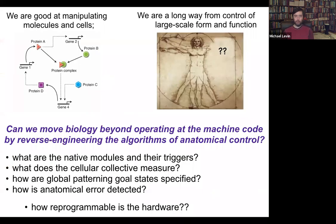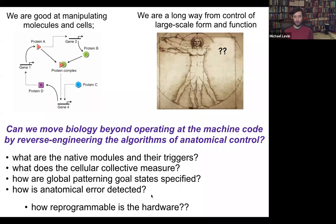My background is computer science, and to me all of this looks like a problem of information processing at different levels. What I would love to know is: could we go beyond the hardware and ask about the algorithms? How are these decisions being made? What do the cellular collectives measure? What are their modules or subroutines? How are these global patterning goals specified and stored? And in particular, how reprogrammable is any piece of biological hardware?